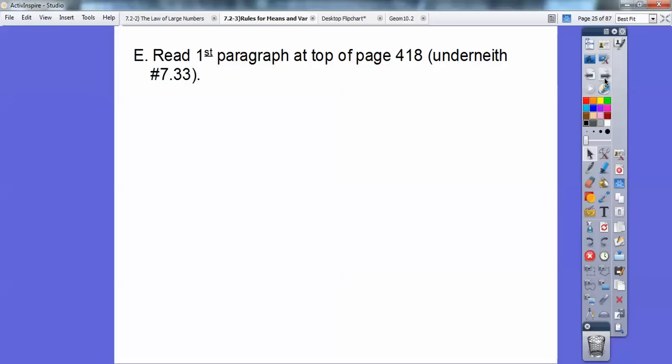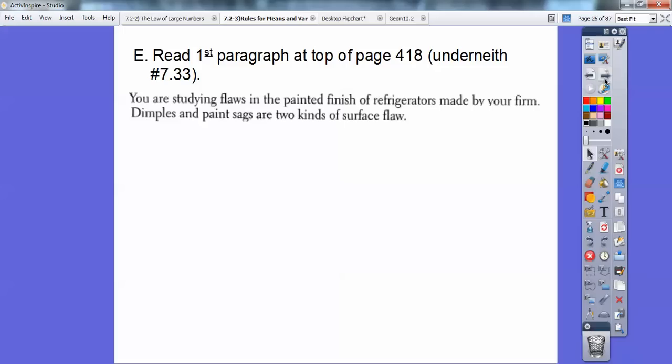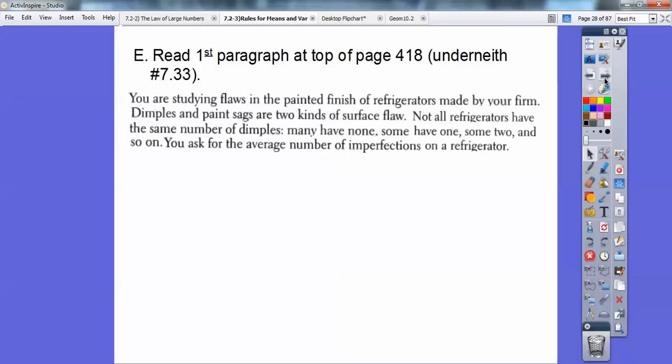So we're going to read the first paragraph at the top of page 418, right underneath problem 733. You're studying flaws in a painting finish on refrigerators made by your firm. Dimples and paint sags are two kinds of surface flaws. Now, not all refrigerators have the same number of dimples. Many have none, some have one, some have two, and so on. You're asked the average number of imperfections on your refrigerator. How many total imperfections of both kinds on average are there on the refrigerator? Well, we need some data first, so here it is.